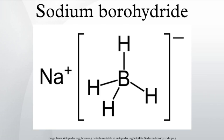Sodium borohydride, also known as sodium tetrahydrodoborate and sodium tetrahydroborate, is an inorganic compound with the formula NaBH4. This white solid, usually encountered as a powder, is a versatile reducing agent that finds wide application in chemistry, both in the laboratory and on a technical scale. Large amounts are used for bleaching wood pulp.